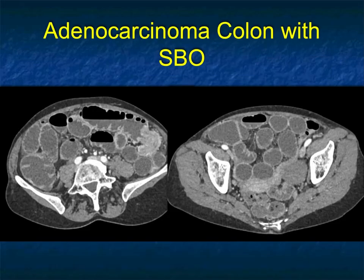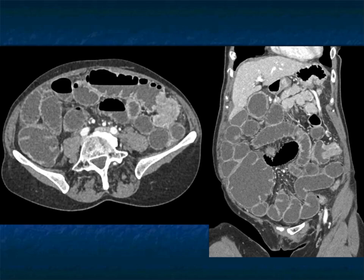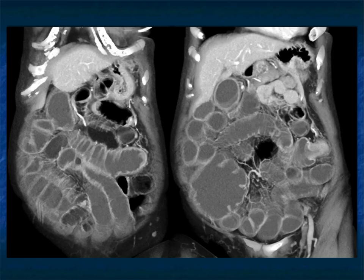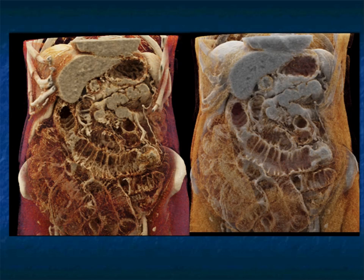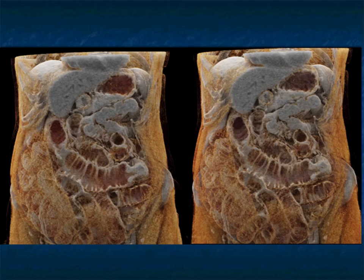Another patient: intussusception due to lipoma. Another patient: adenocarcinoma of the small bowel with dilatation and obstruction. This patient had intussusception that was intermittent, but following the dilated loops of bowel downward, you see the transition in the left lower quadrant and you see the mass. The mass is obvious on the axial, but perhaps more obvious on the coronal as you follow the transition downward — a really nice appearance of an infiltrating tumor that led to intermittent intussusceptions. Beautifully shown on cinematic rendering — a particularly nice example of small bowel obstruction due to malignancy.